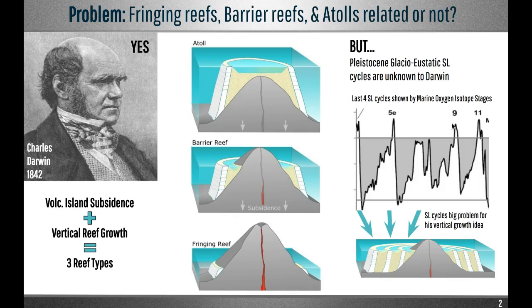In fact, the ice age consisted of multiple glacial cycles, and sea level oscillated several times. That was only realised much later in the 1950s, when Cesare-Emiliani linked glaciations with temperature cycles in deep sea cores.